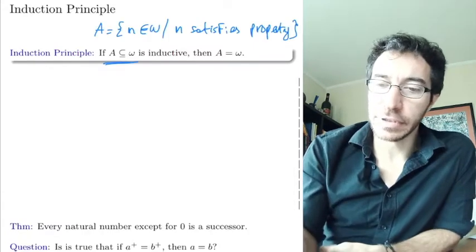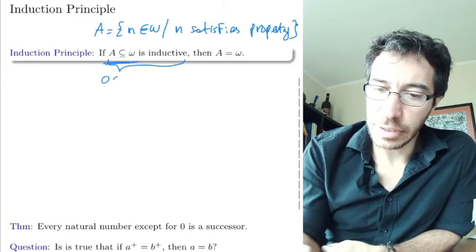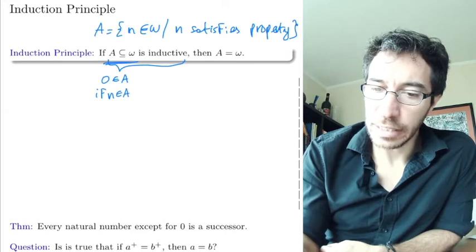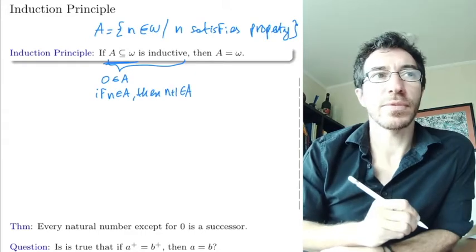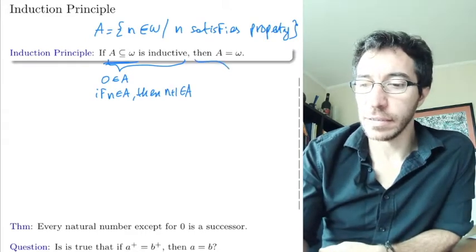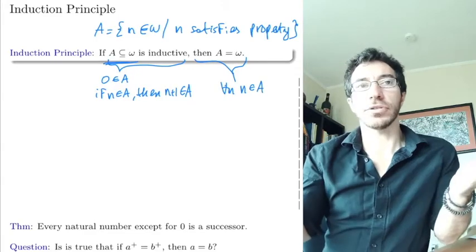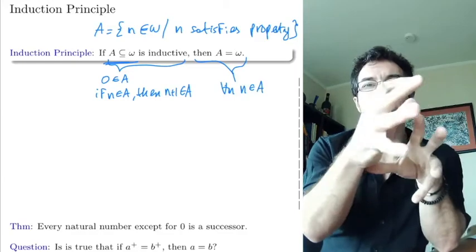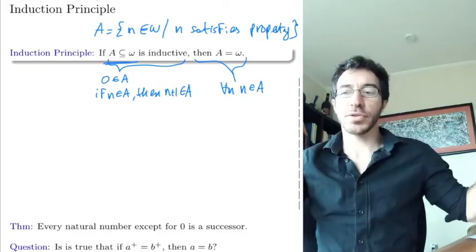So being inductive can be stated as: 0 belongs to A, and if n belongs to A then n plus 1 belongs to A. That's what it means to be inductive. And what we are proving is that for every n, n belongs to A. So that's induction: if 0 satisfies the property and whenever you know that n satisfies the property you can prove n plus 1 satisfies the property, then this property is true for everybody.